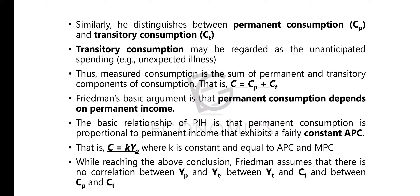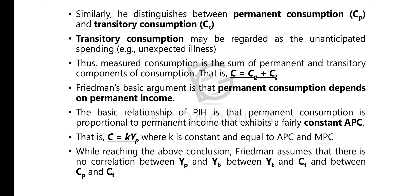Transitory consumption may be regarded as unanticipated spending. For example, if you suddenly get sick and need a larger amount for your treatment, that is a transitory consumption. Overall, measured consumption is the sum of permanent and transitory components of consumption.